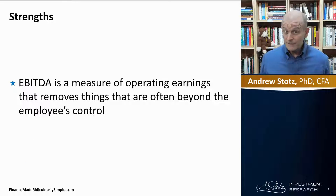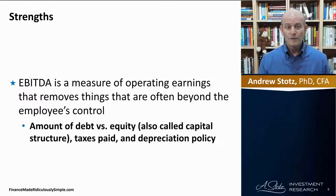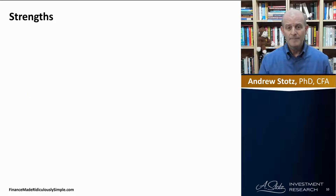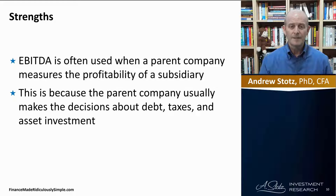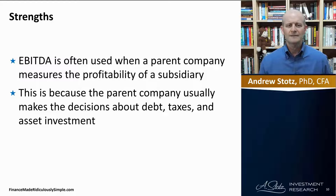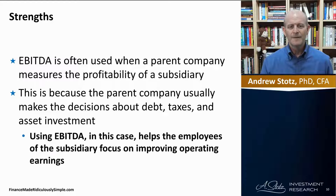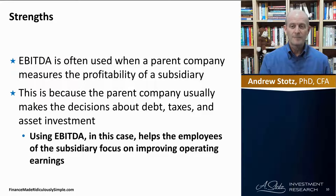EBITDA is a measure of operating earnings that removes things often beyond the employee's control — like the amount of debt the company has, the taxes paid, or the depreciation policy. Another strength is that EBITDA is often used when a parent company measures the profitability of a subsidiary, because the parent usually makes the decisions about debt, taxes, and asset investment. Using EBITDA helps the subsidiary's employees focus on improving operating earnings.